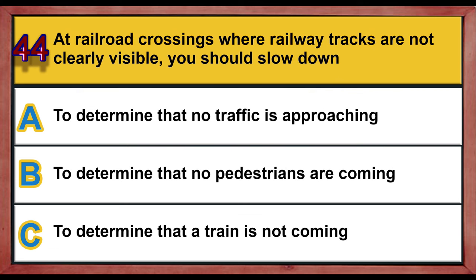Question 44. At railroad crossings where railway tracks are not clearly visible, you should slow down: A. To determine that no traffic is approaching. B. To determine that no pedestrians are coming. C. To determine that a train is not coming.